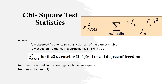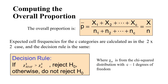Each cell in the contingency table should have an expected frequency of at least one. The overall proportion can be calculated for more than two variables using the appropriate formula, and expected cell frequencies are computed the same way as in the two-by-two case. The decision rule remains the same: reject the null hypothesis if the test statistic exceeds the critical value from the chi-square distribution with c−1 degrees of freedom.